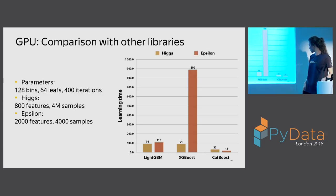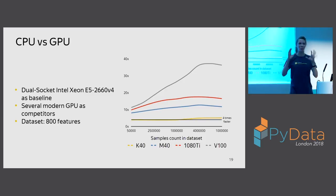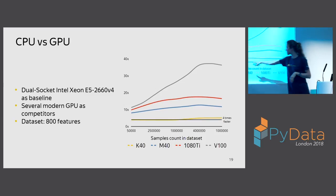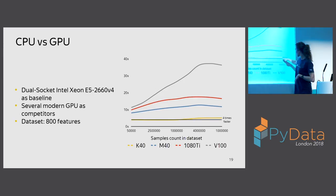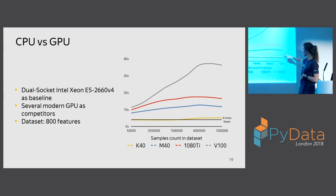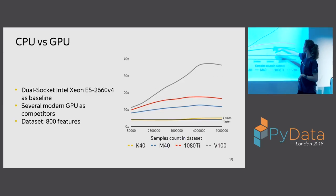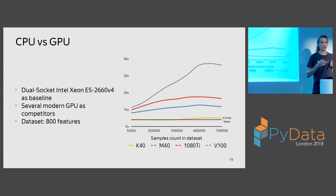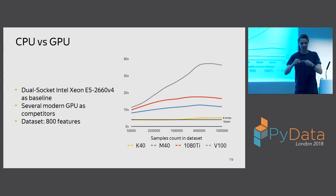Here are the benchmarks. The more data you have, the more speedup you get with GPUs. With a K40, increasing the number of samples gives up to four times speedup. With newer GPUs you get up to 40 times speedup. CatBoost also supports multiple GPUs for distributed training between several GPUs, making it even faster. It is also the first library to support multi-server distributed GPU training.